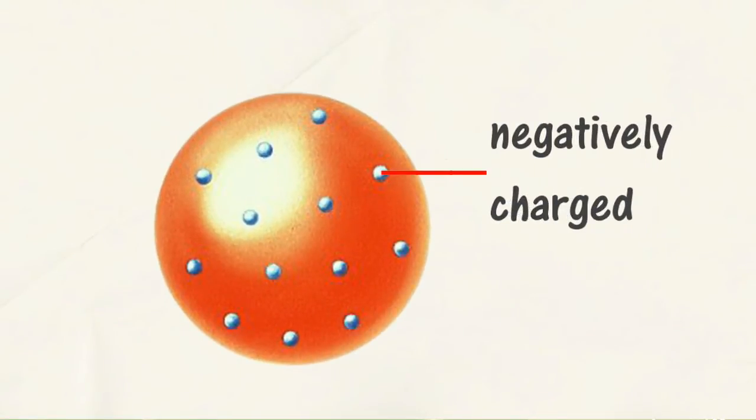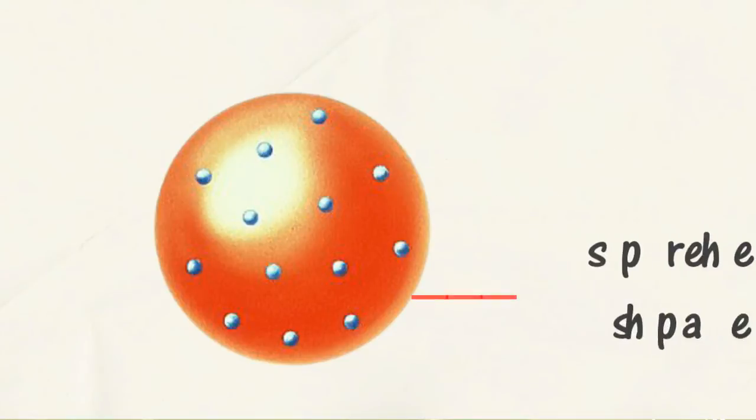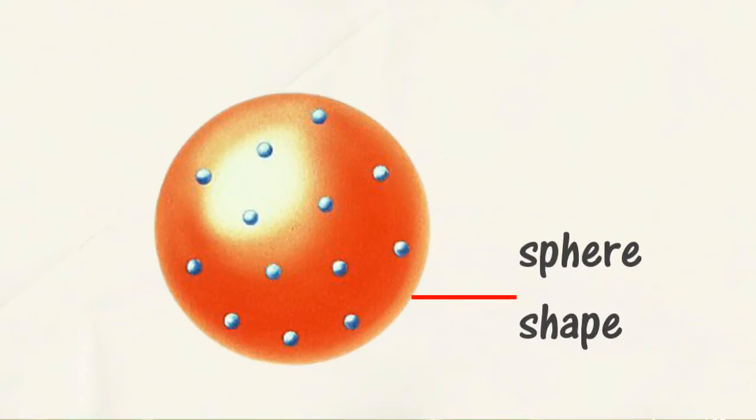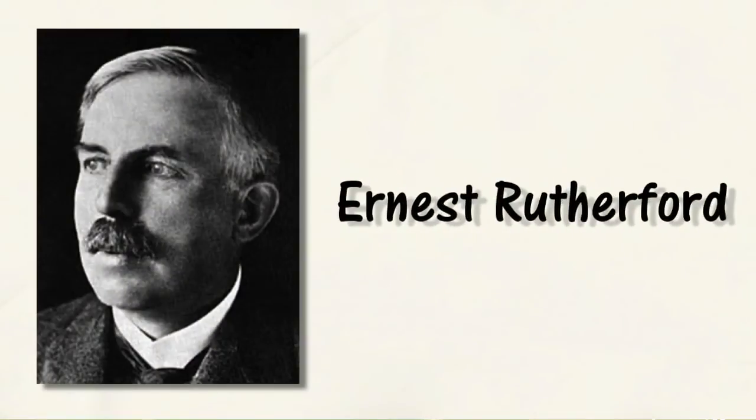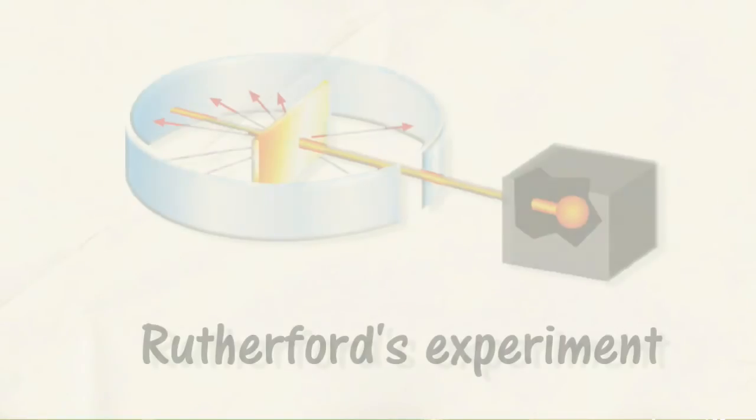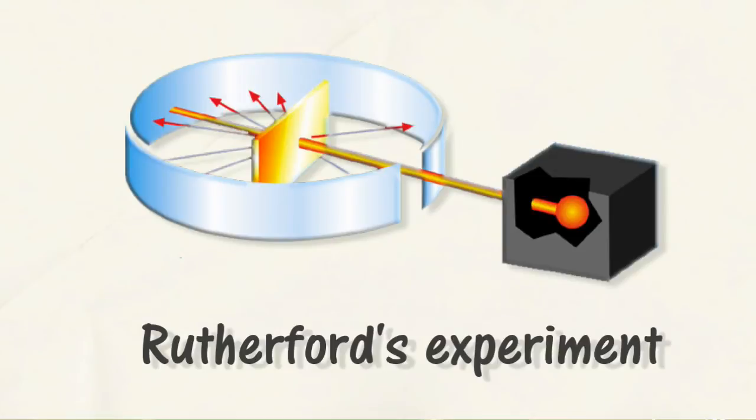Electrons are spread throughout the sphere-shaped atom which is positively charged. Rutherford fired alpha particles at thin gold. Most of the particles went straight through but some came straight back.